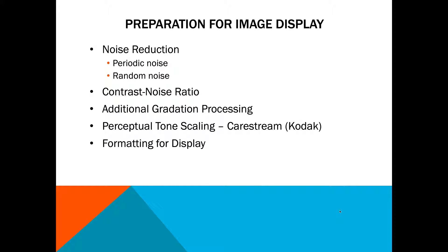This next portion of the lecture, we're going to be really focusing on image noise and contrast to noise ratio. There are basically two types of noise: periodic noise, which is electronic noise, and random noise, which comes from quantum mottle.